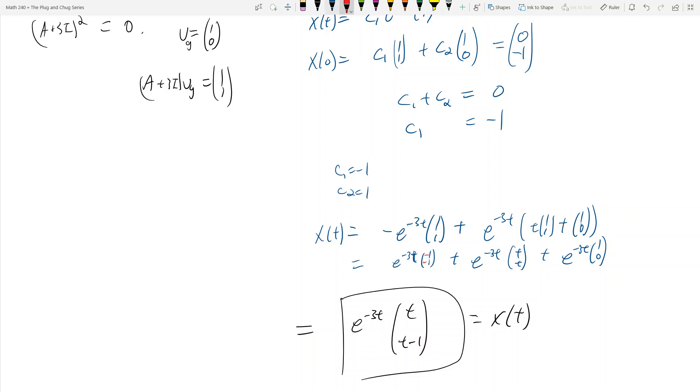And then we get e^(-3t) times, looking at the top entries, there's t, and then you've got a minus 1 here, you got t, you got a 1. So that goes up here. And then you got minus 1, t, and 0. So the bottom becomes t - 1 + 0.